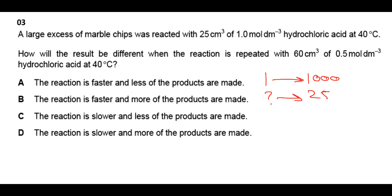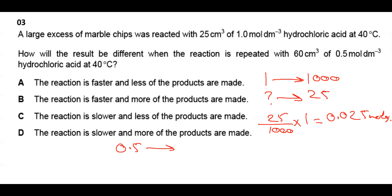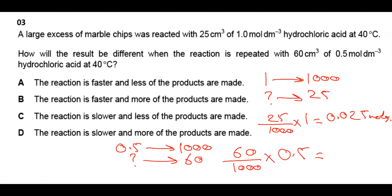Calculation for case 1: (25/1000) × 1 = 0.025 moles of HCl. For case 2: (60/1000) × 0.5 = 0.03 moles of HCl. Comparing both, the second situation has more moles of HCl than the first, but the concentration is lower (0.5 vs 1 mol/dm³).